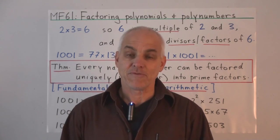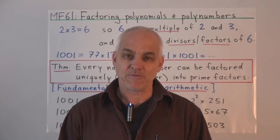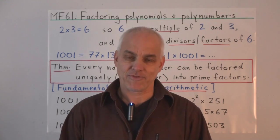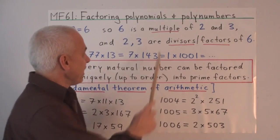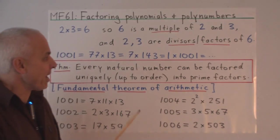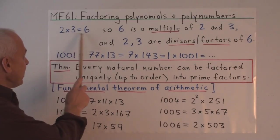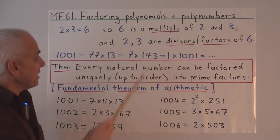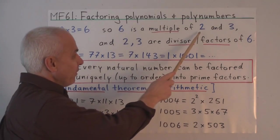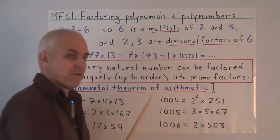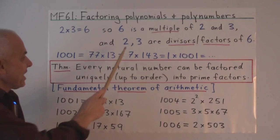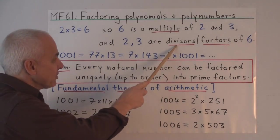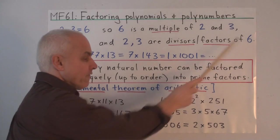First I'll review some basic facts about factoring with ordinary natural numbers. So a few definitions, just to remind you: if 2 times 3 equals 6, we say that 6 is a multiple of 2 or a multiple of 3. And we say that 2 and 3 are divisors or factors of 6.